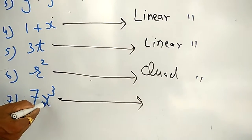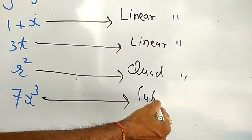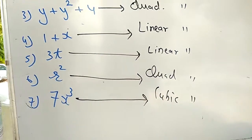Seventh one: 7x³. Maximum power is 3, so it is called as cubic polynomial.